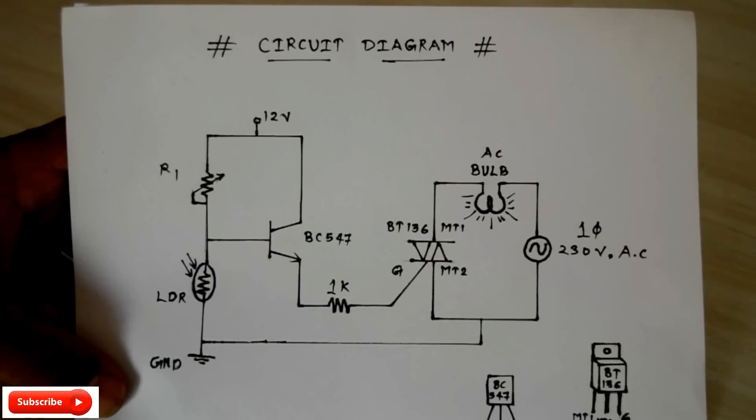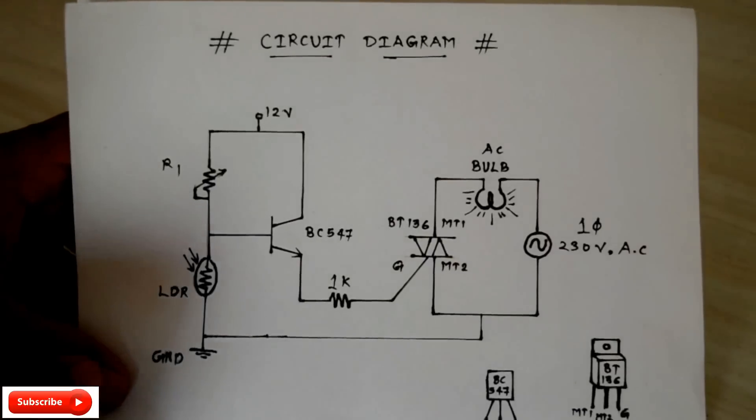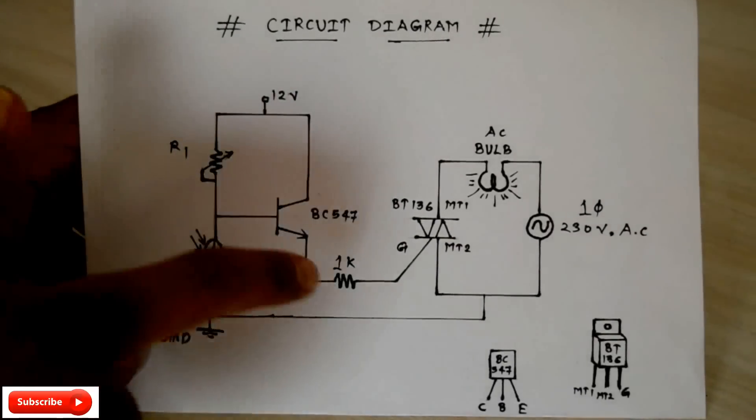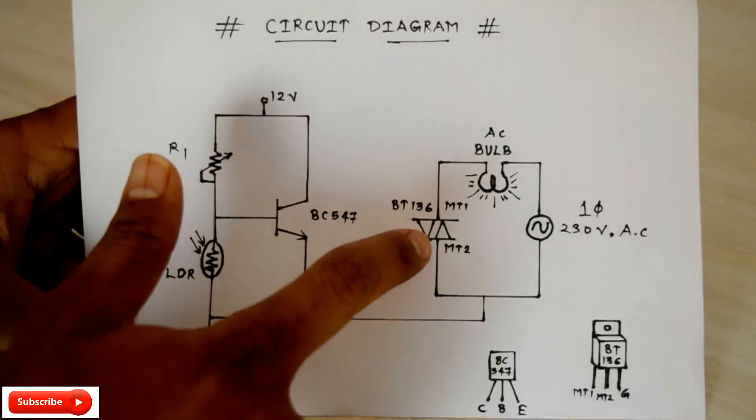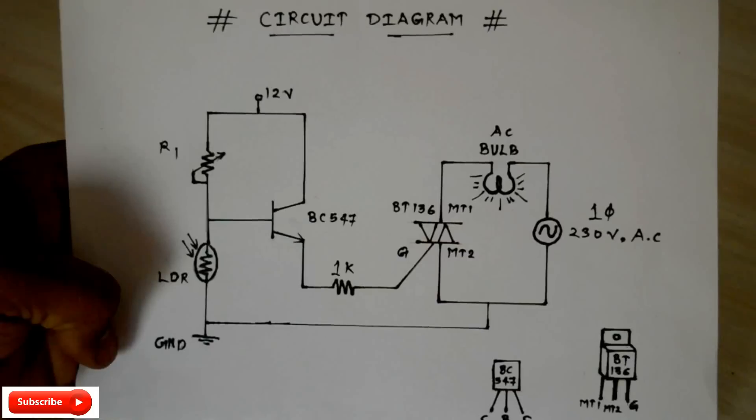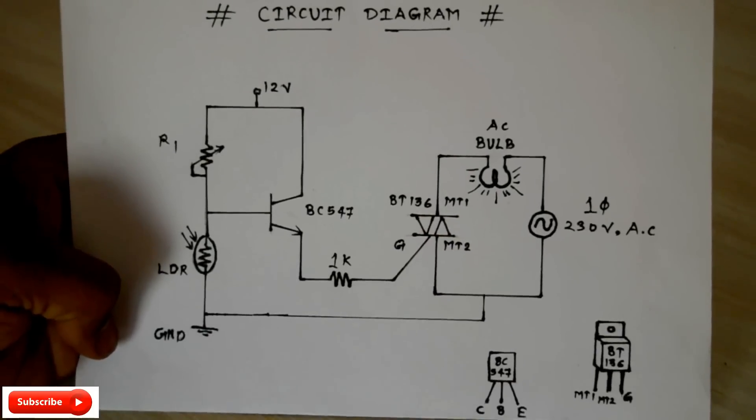This is the actual circuit diagram of our project. In this we use one LDR, two resistors, one BC 547 NPN type transistor and one BT 136 TRIAC. The terminality of both as follows. Let's see what happens in this circuit diagram.